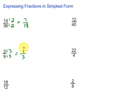That's simplest form, because anytime we're left with a 1, it's got to be in simplest form — there's no more we can do to simplify.